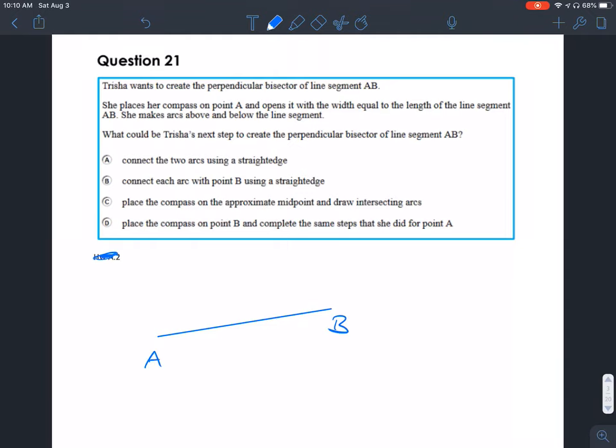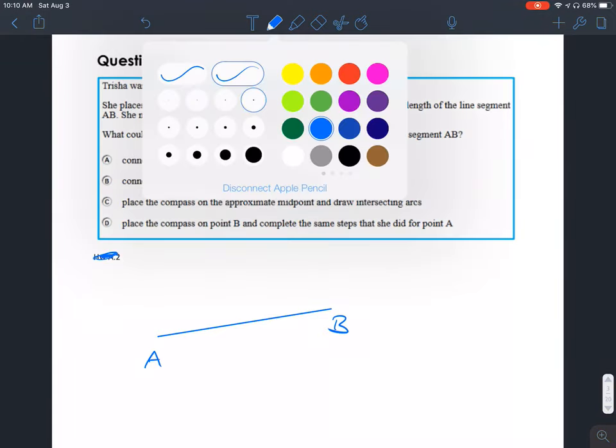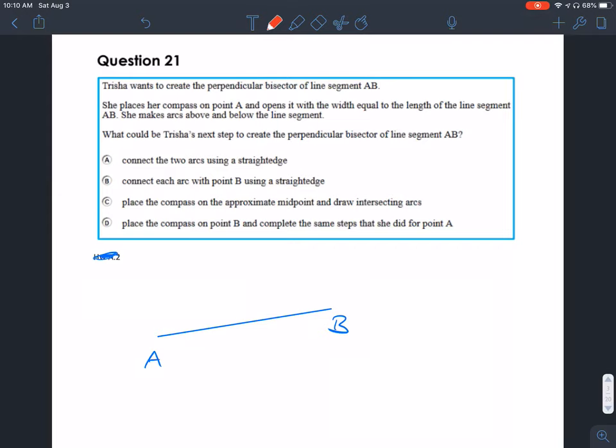Here's line segment AB. She wants to make the perpendicular bisector. She places her compass at point A. So that's like the pointy part here.